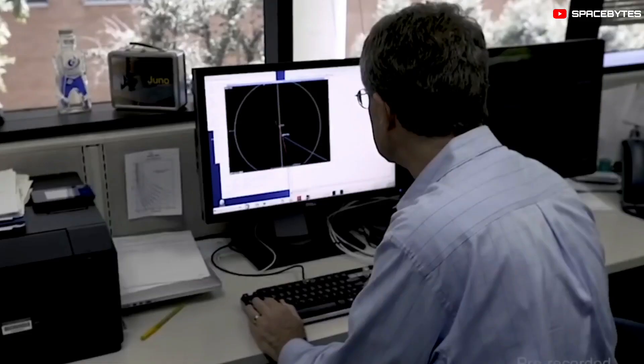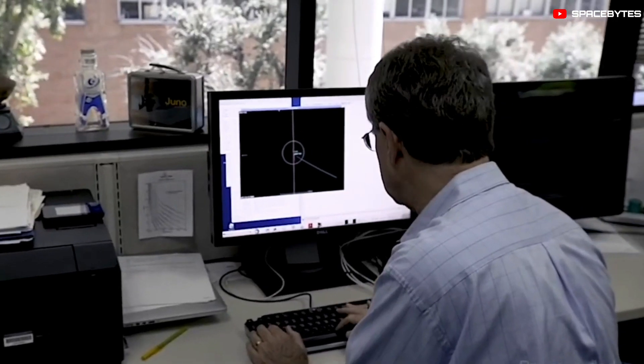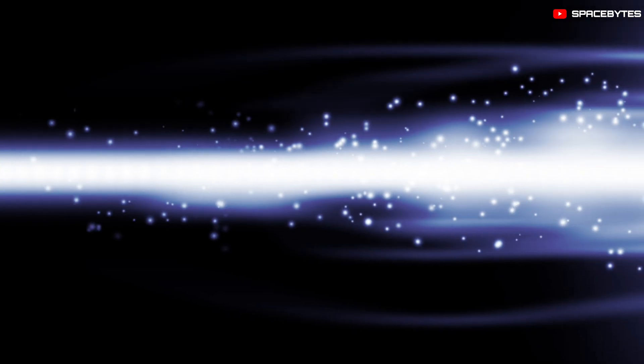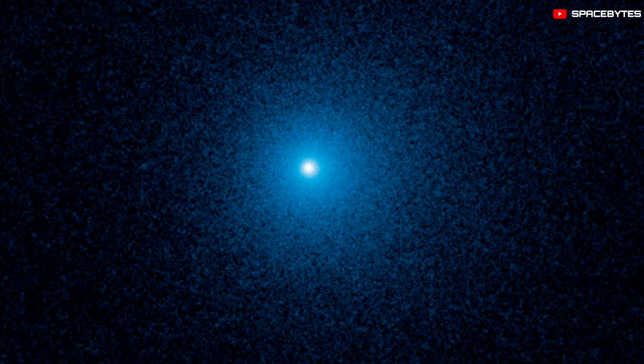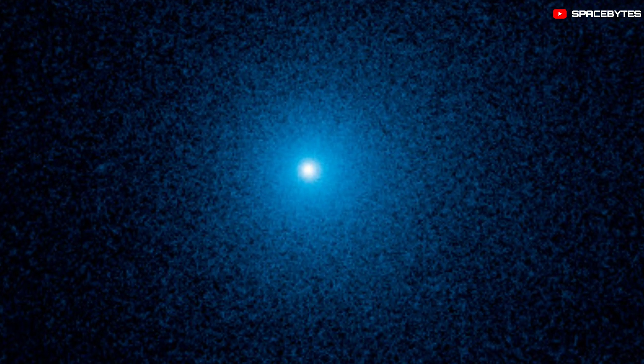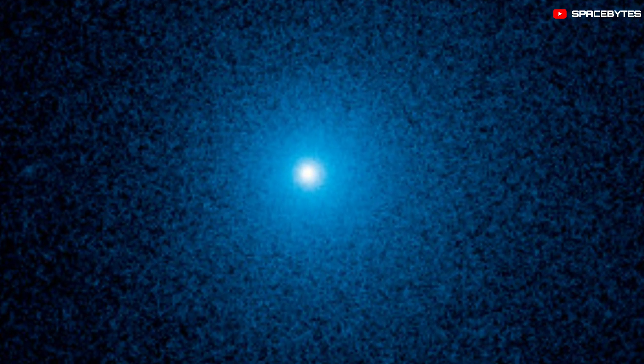Astronomers are still unsure exactly how big comet C-2017 K2 is, but it's potentially huge. Initial observations suggested it may be up to 100 miles wide, though Hubble data puts it at a much more conservative 12 miles wide.